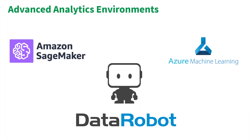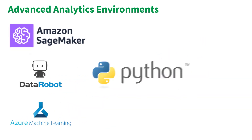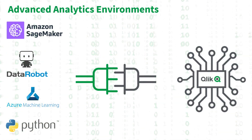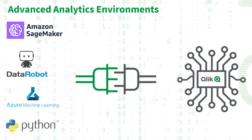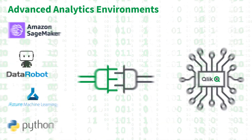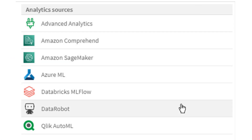If utilizing advanced analytics environments such as DataRobot, Amazon SageMaker, Azure ML, or even custom-built services, you can now leverage those algorithms with Qlik's engine to build predictions into your data pipeline. There are now a number of pre-built analytics connectors that enable you to easily configure and govern connections to those analytics sources.